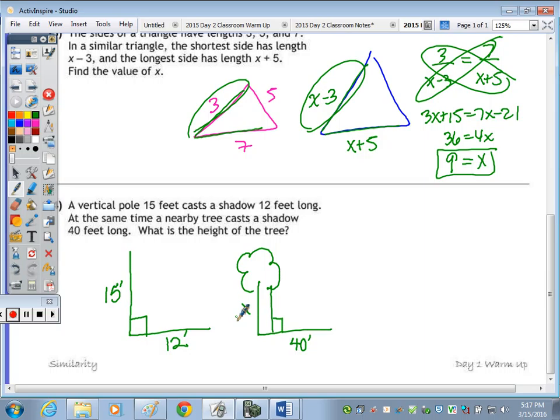So looking at these two legs of the right triangle, we do have right triangles. And the proportion would be, or you can write something different, but I'm going to do 15 to X. So the height of the pole to the height of the tree equals the shadow of the pole to the shadow of the tree. As long as your cross products are 12X and 600, you could have written a different proportion. If the cross product is the same, then you're okay. Divide by 12, and X is 50. So the height of the tree is 50 feet.